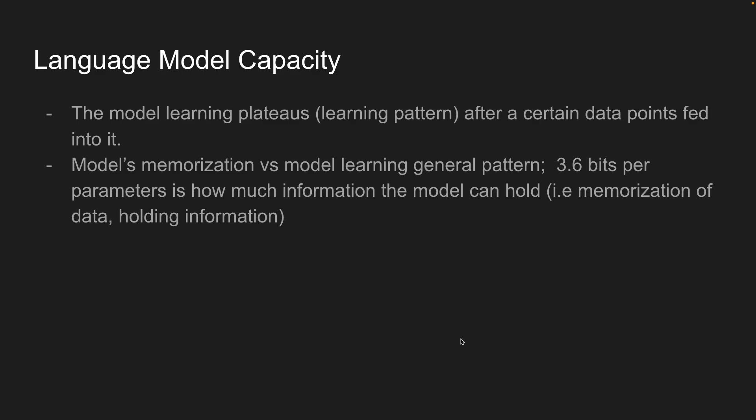What about language model capacity? The model's learning plateaus after a certain data point. What's also very interesting is that model memorization has a general pattern where only 3.6 bits per parameter is how much the model can hold — and this is not affected by the floating-point precision of the parameters, like 16-bit, 32-bit, or 8-bit. Once those 3.6 bits per parameter have been fully exhausted, the model starts to learn the general pattern of the data rather than memorizing specific information.